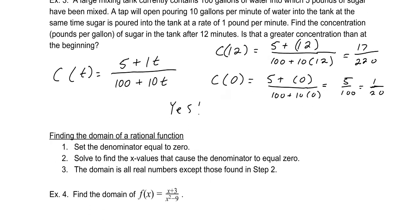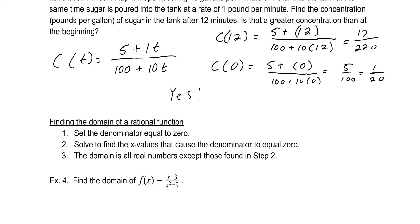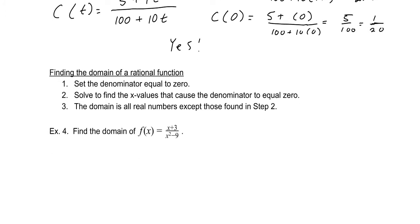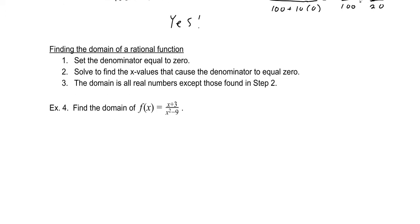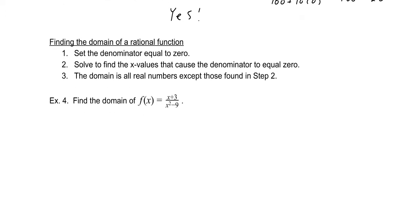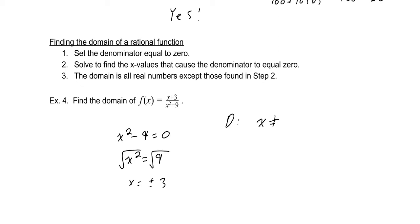Next we want to find the domain of a rational function. Set the denominator equal to zero and find the x values that cause it to be zero — the domain is all real numbers except those values. To find the domain of f of x equals (x + 3) over (x squared minus 9), set x squared minus 9 equal to zero. Solving gives x squared equals 9, so x equals plus or minus 3. Those values make the denominator zero.